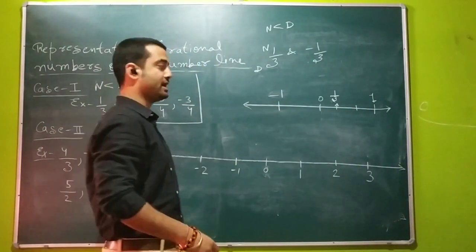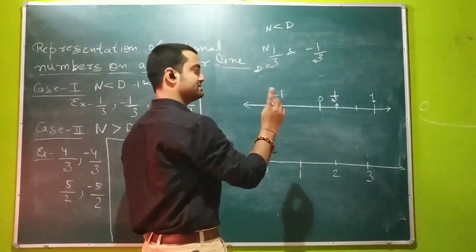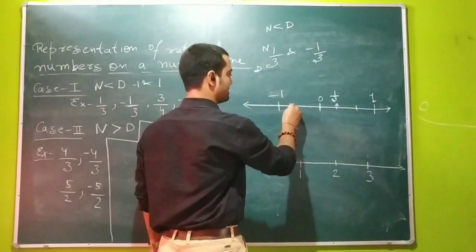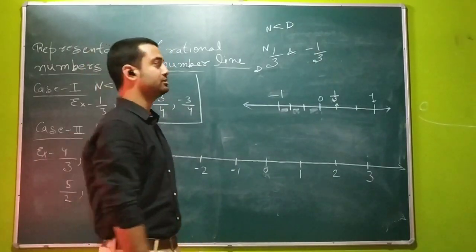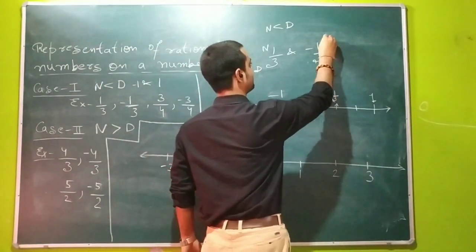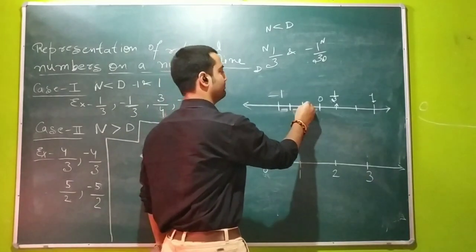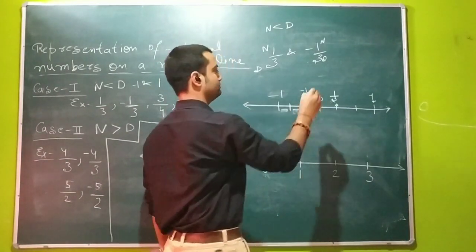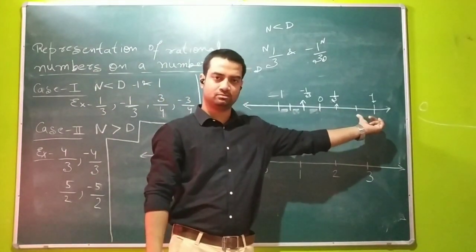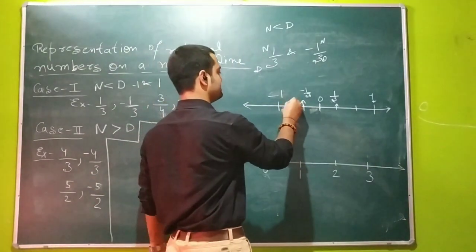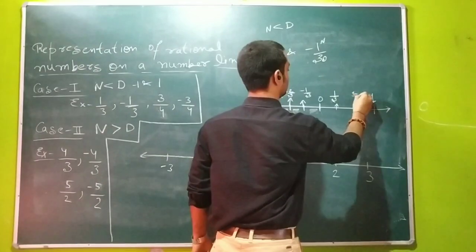For minus 1 by 3, since the number is negative it will be between 0 and minus 1. We divide the distance between 0 and minus 1 into 3 equal parts — part 1, part 2, and part 3. Since the denominator is 3, and the numerator tells us where the number lies, the first part is minus 1 upon 3. The second part is minus 2 upon 3, and the corresponding positive side gives us 2 upon 3.